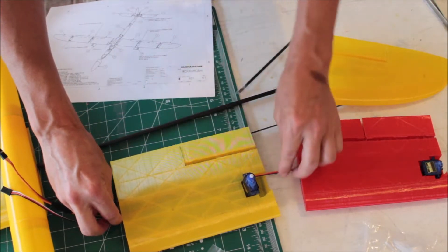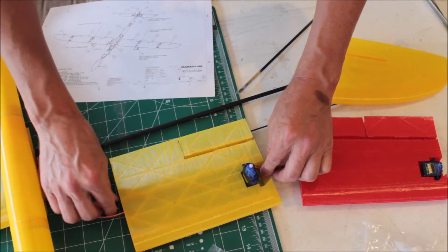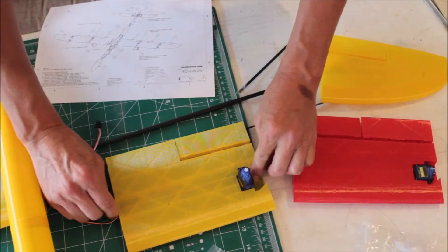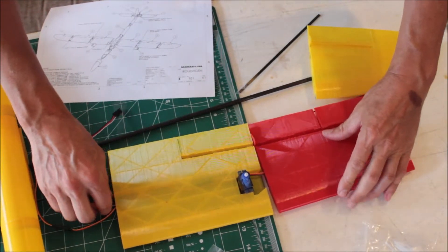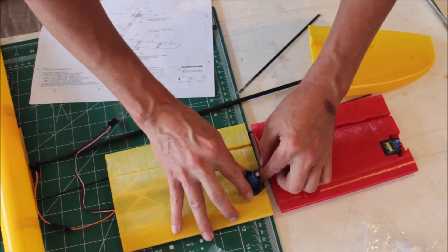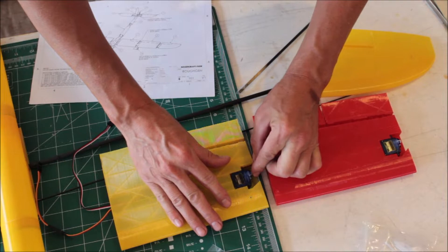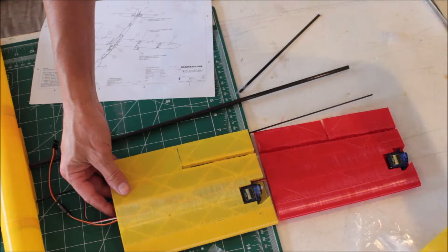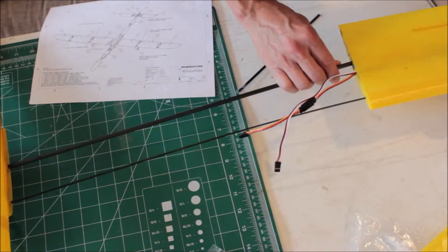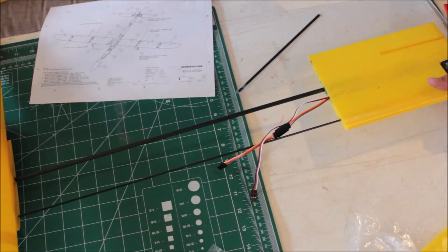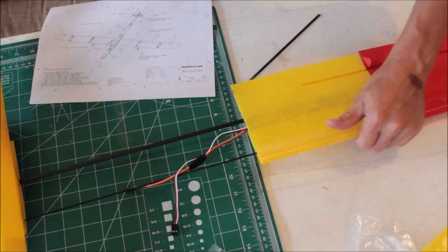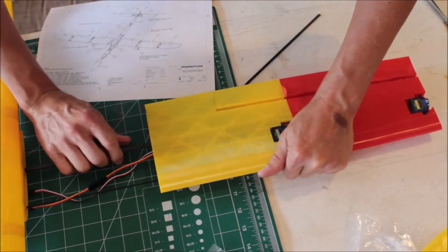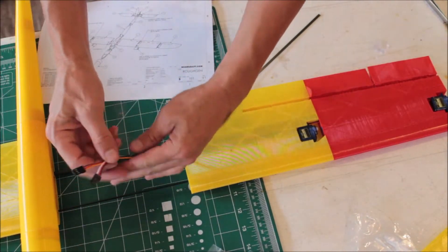You leave the servos loose. You can put the control horns on later, just keep pushing them on in. Then you put the wires through the fuselage, feed them through just like you would normal build.